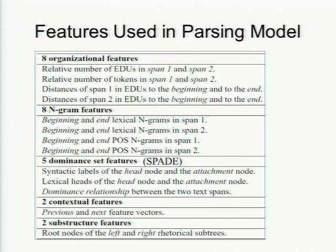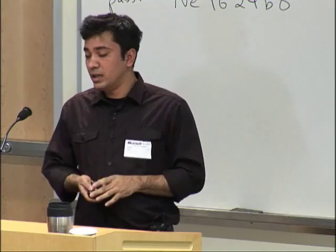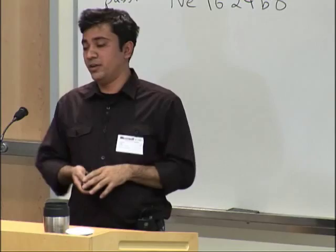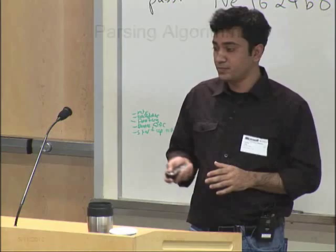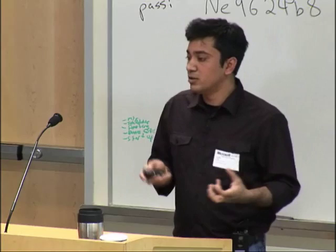The features in our parsing model include 8 organizational features capturing length and position, 8 n-gram features capturing lexical and POS information, 5 dominance set features (shown useful in SPADE), 2 contextual features, and 2 substructure features. The substructure features incorporate the head node of the left and right rhetorical subtrees, thereby capturing hierarchical dependencies. We implemented a probabilistic CKY-like bottom-up parsing algorithm — for four EDUs, the dynamic programming table has 4x4 entries using just the upper triangular portion, storing the probability of each constituent and using argmax over possible structure and relations to find the global optimal discourse tree.